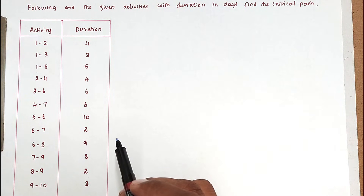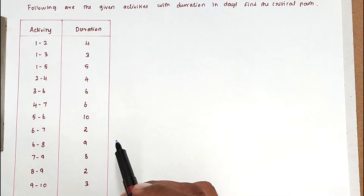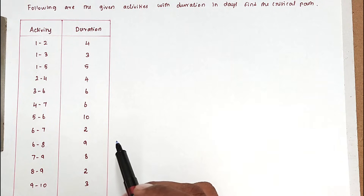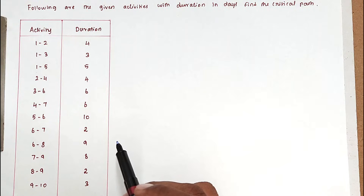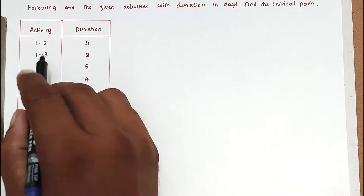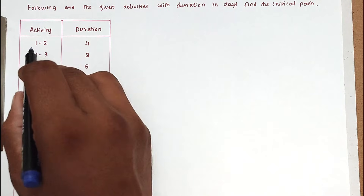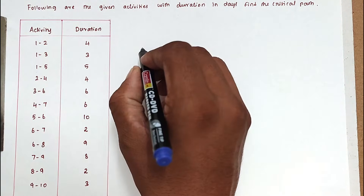The critical path is the path containing the maximum duration — that is called the critical path. The activities lying on the critical path are called critical activities. Now we can draw the network diagram.